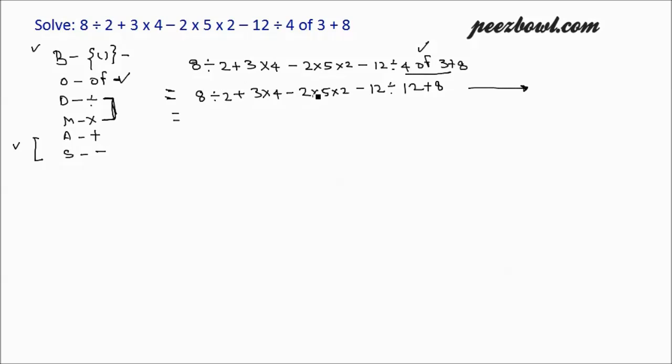In this case, 8 divided by 2, 3 multiplied by 4, 2 multiplied by 5 multiplied by 2, then 12 divided by 12. These all have equal priority, so we can perform all these operations together from left to right.